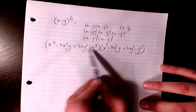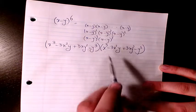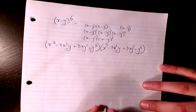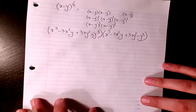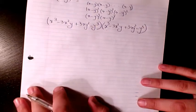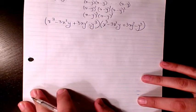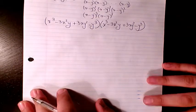We need to do it for all terms, so in total we will have 16 terms. Then we need to start simplifying.